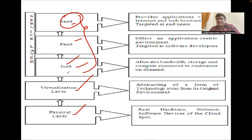Platform as a Service means if I'm a developer and I want to develop and deploy applications, I need a platform — and I can get it from the cloud service provider. Infrastructure as a Service means creating infrastructure like networking and storage for storing data and providing security. That is what we call Infrastructure as a Service. Together these form the cloud service model.